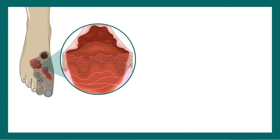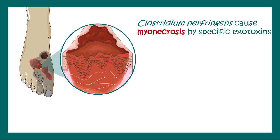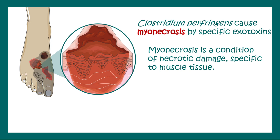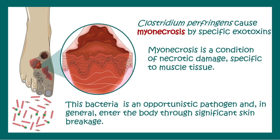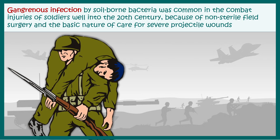Gas gangrene leads to clostridial myonecrosis — necrosis of the muscle tissues — due to the exotoxins produced by this bacteria. It leads to damage in the muscle tissue specifically. This bacteria is an opportunistic pathogen in general, meaning it can enter the body through any breakage in the skin. Gangrenous infection was soil-borne and was most common during the Second World War among combat soldiers.